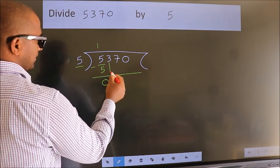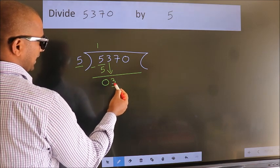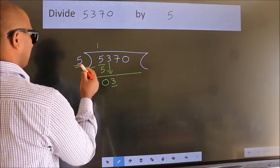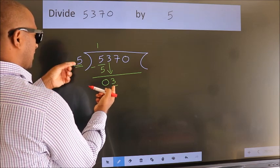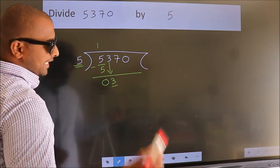After this, bring down the beside number. So 3 down. Here we have 3, here 5. 3 is smaller than 5, so we should bring down the second number.